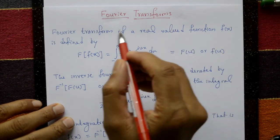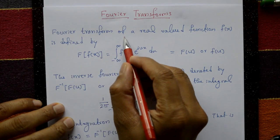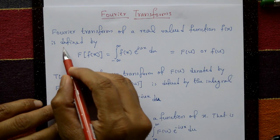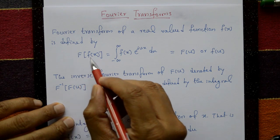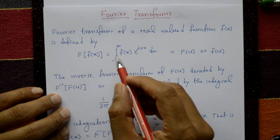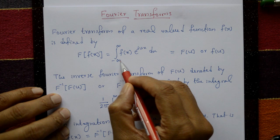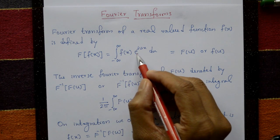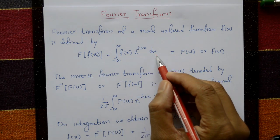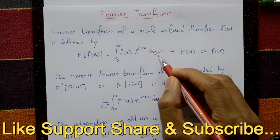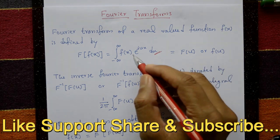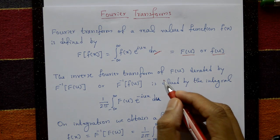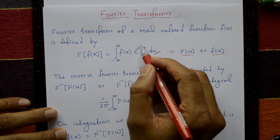Fourier transform. The Fourier transform of a real valid function f of x is defined by F of f of x equal to the integration from minus infinity to plus infinity of f of x times e to the power i u x with respect to x. After integration we get F of u. This is a Fourier transform.